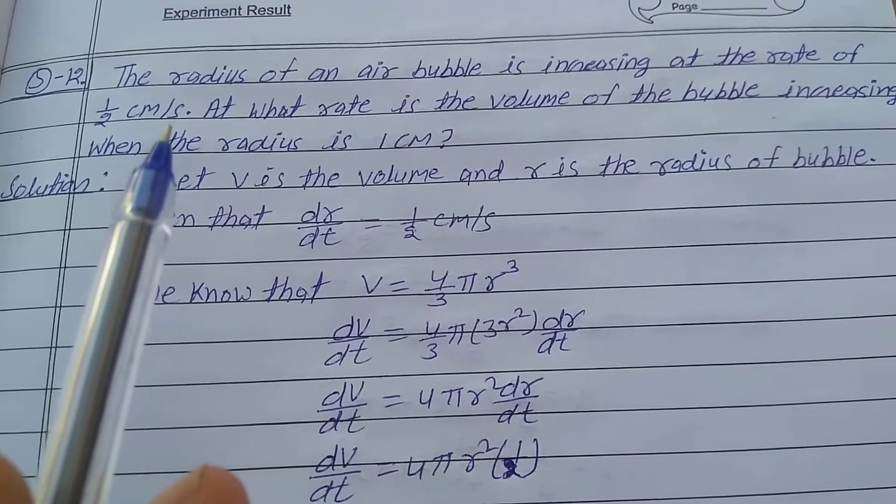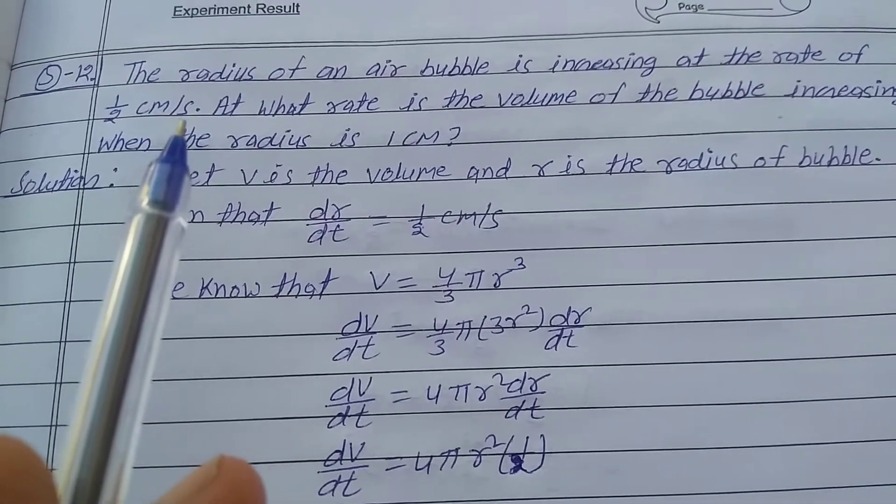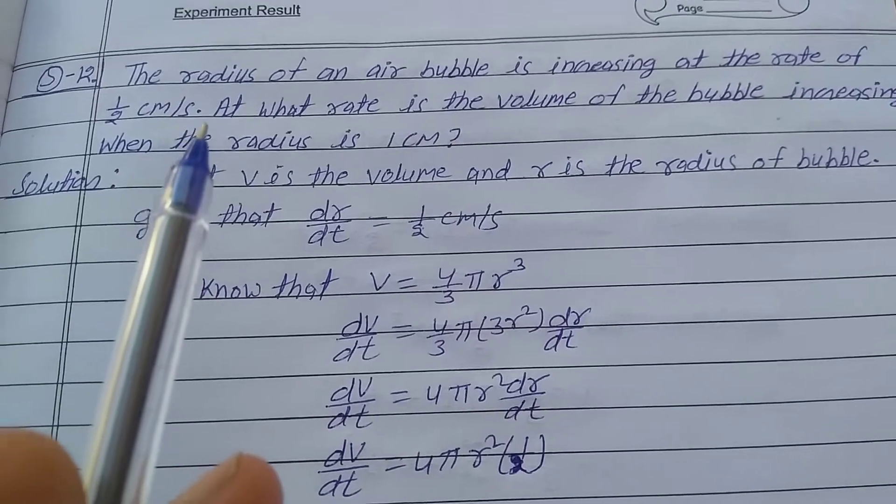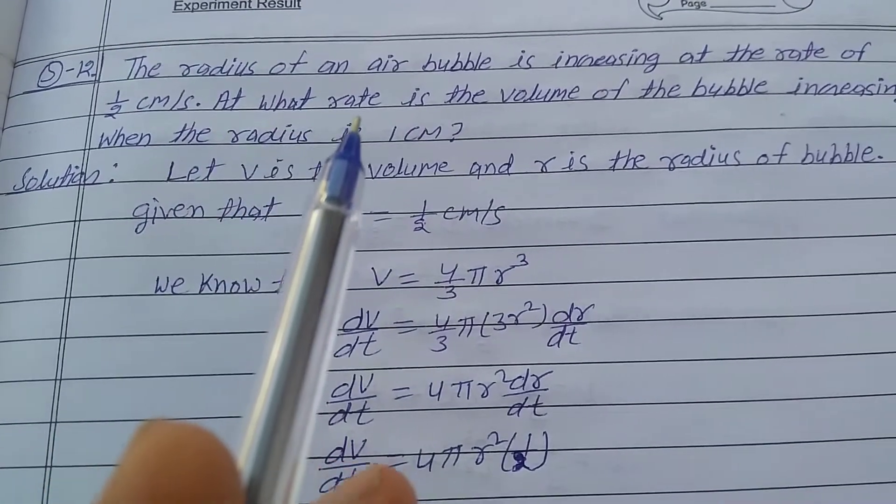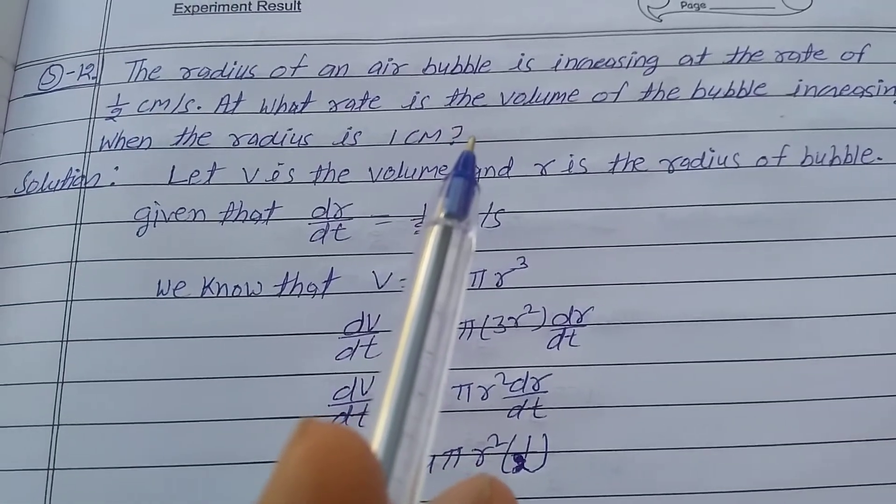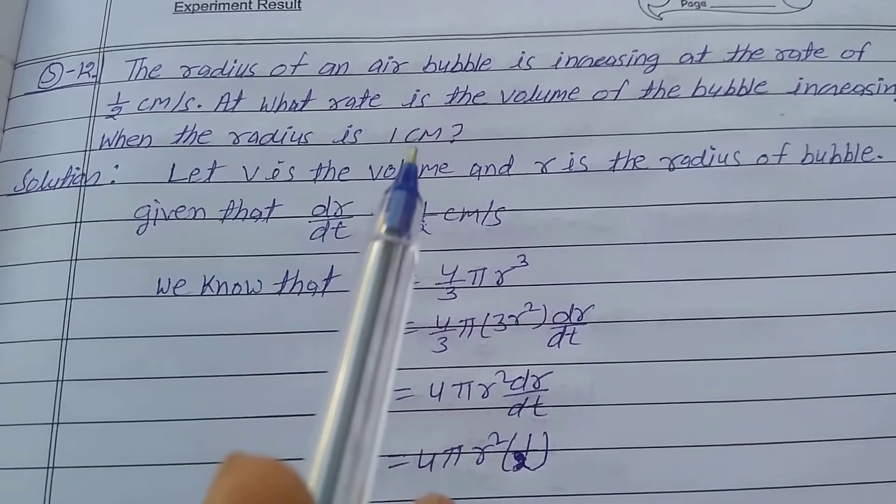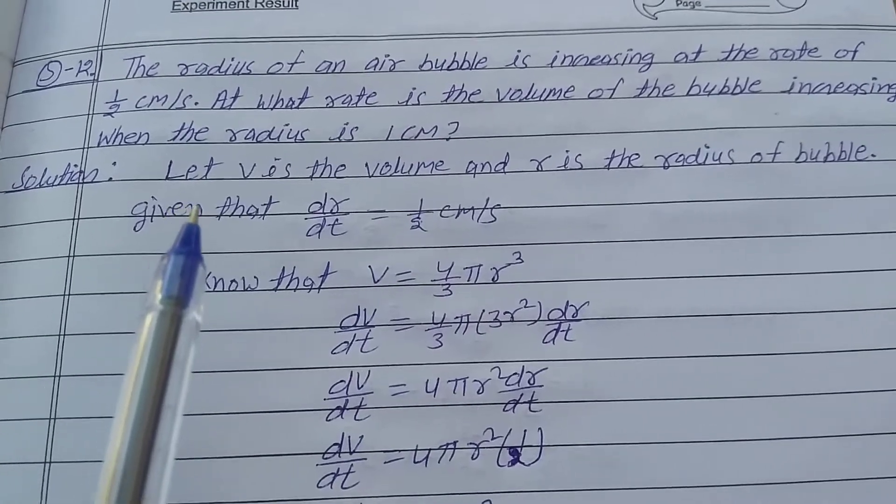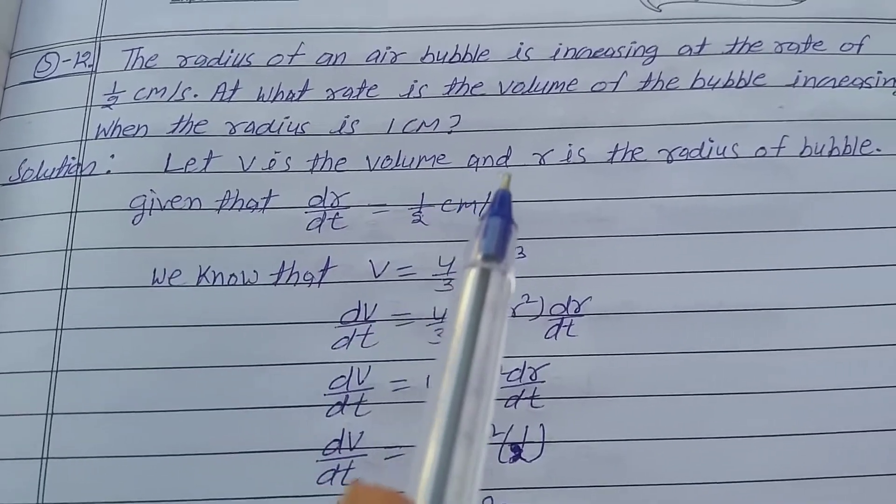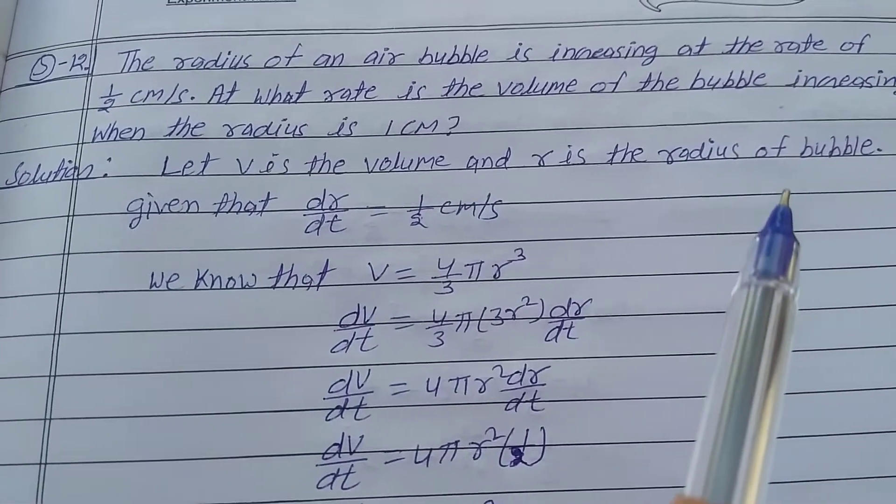Given: dr/dt (increasing rate of radius) equals 1/2 centimeter per second. Find: dV/dt (increasing rate of volume) at radius of 1 centimeter. Solution: Let V be the volume and r be the radius of the bubble.